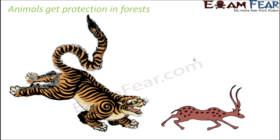Animals live in the forest because they get protection there. You might ask how animals are protected when a tiger eats a deer. Well, everywhere you will always have predators — organisms that kill and eat other animals — and prey, which are the animals that get eaten by predators.